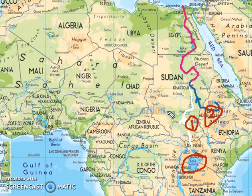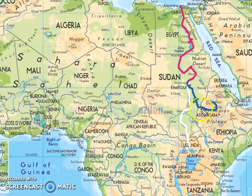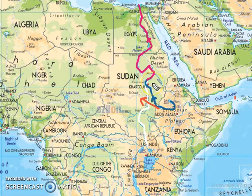White Nile is longer than the Blue Nile and adds 20% of the water to the main Nile channel. The Blue Nile, on the other hand, adds 80% of the water to the main channel of the world's longest river. The Blue Nile originates from Lake Tana in Ethiopia and flows into Sudan from the southeast. Both major tributaries confluence in the north of Sudan's capital, Khartoum.